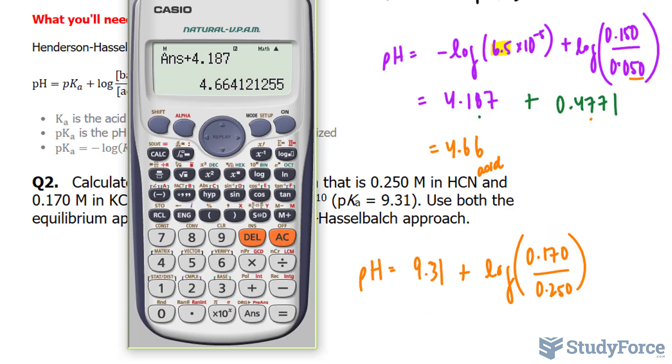Let's use our calculator. We'll find out the log of 0.170, that's three significant figures, divided by another number that is three significant figures.